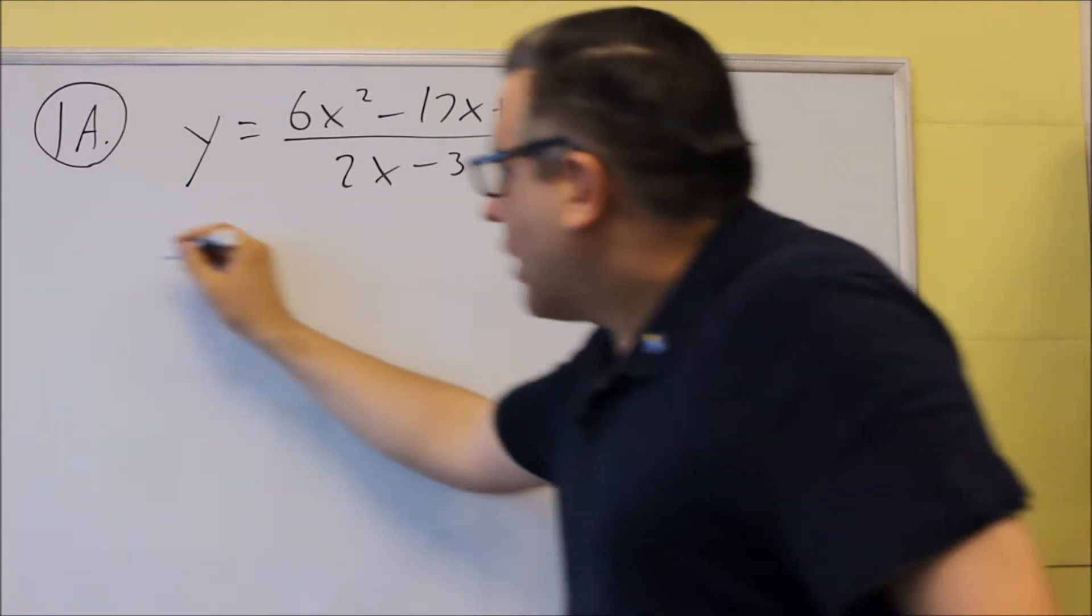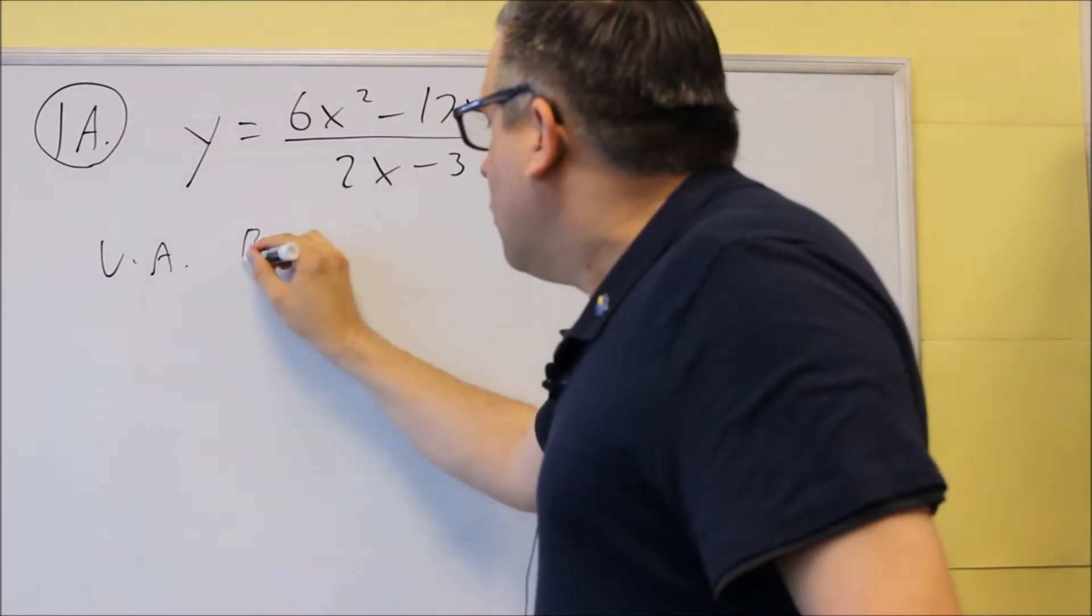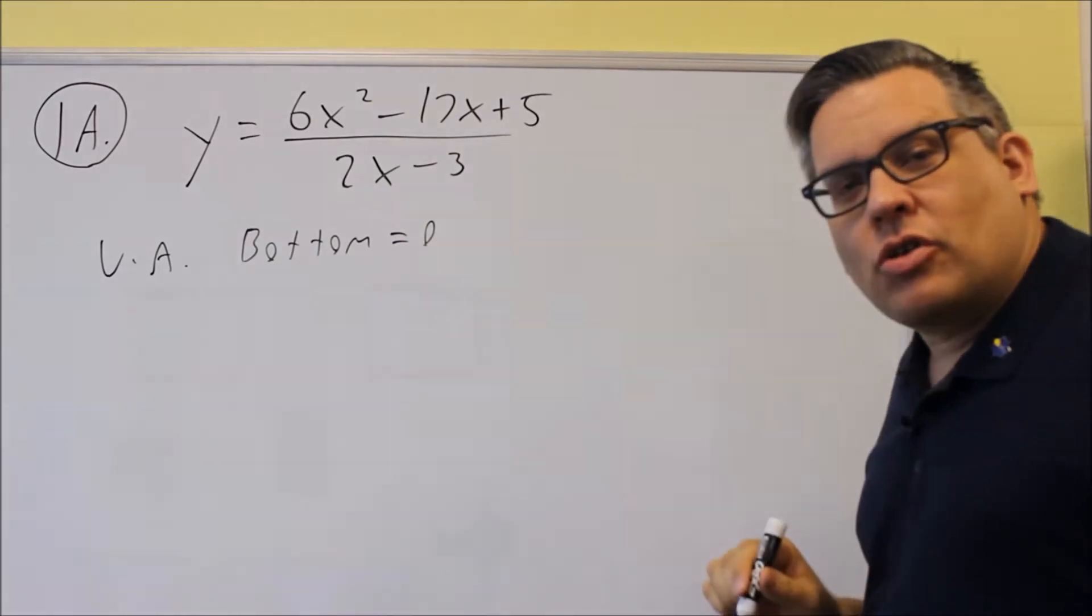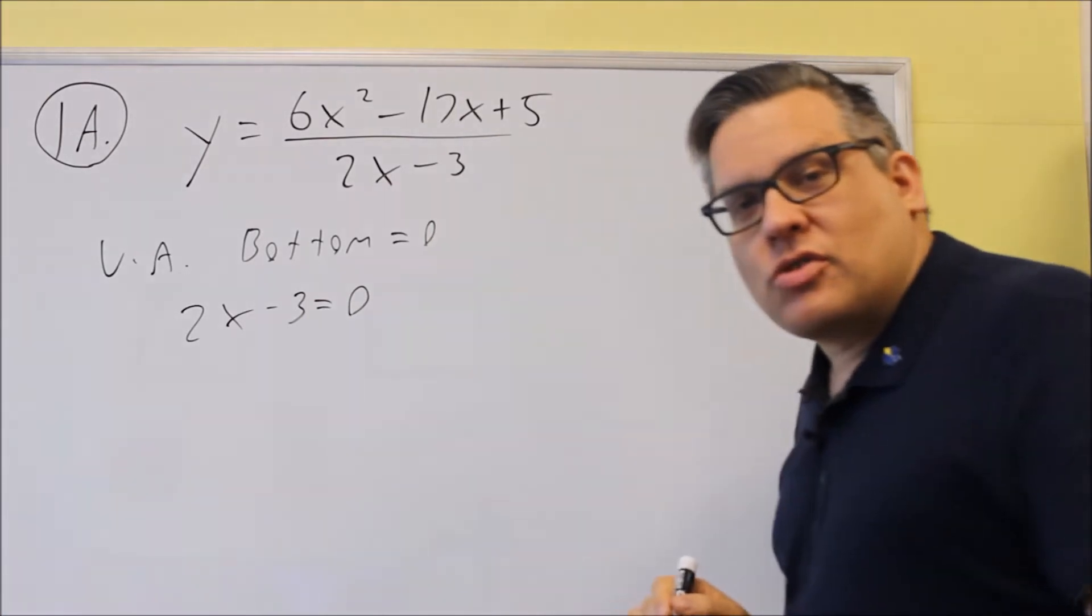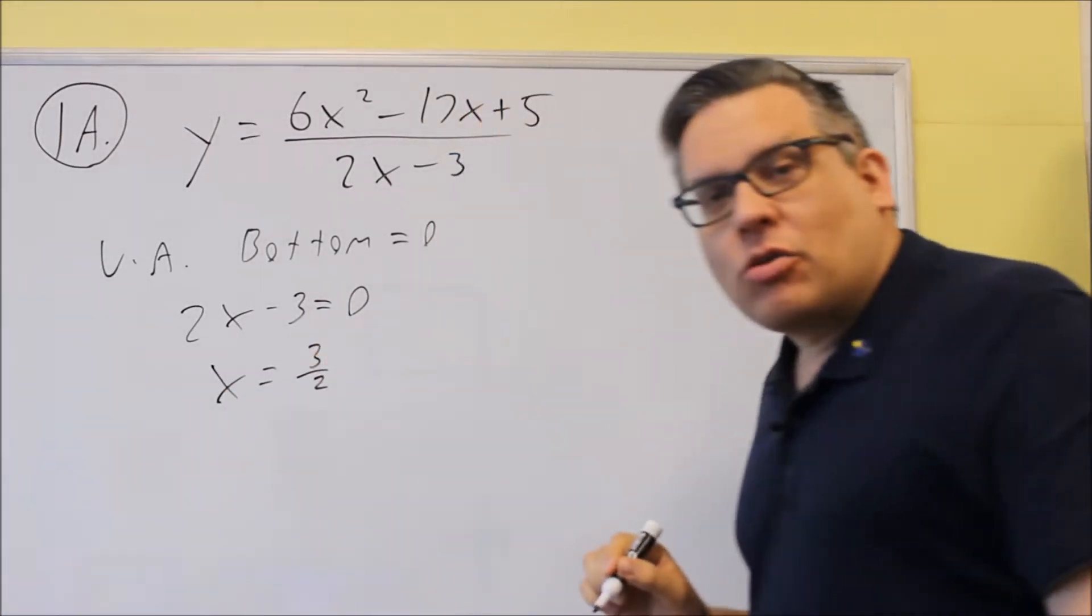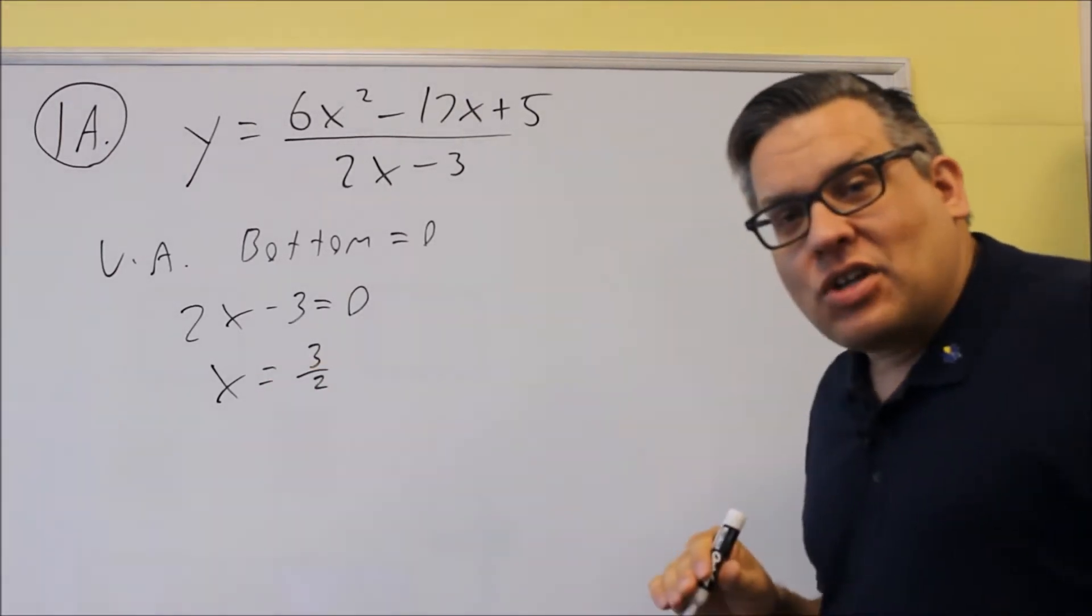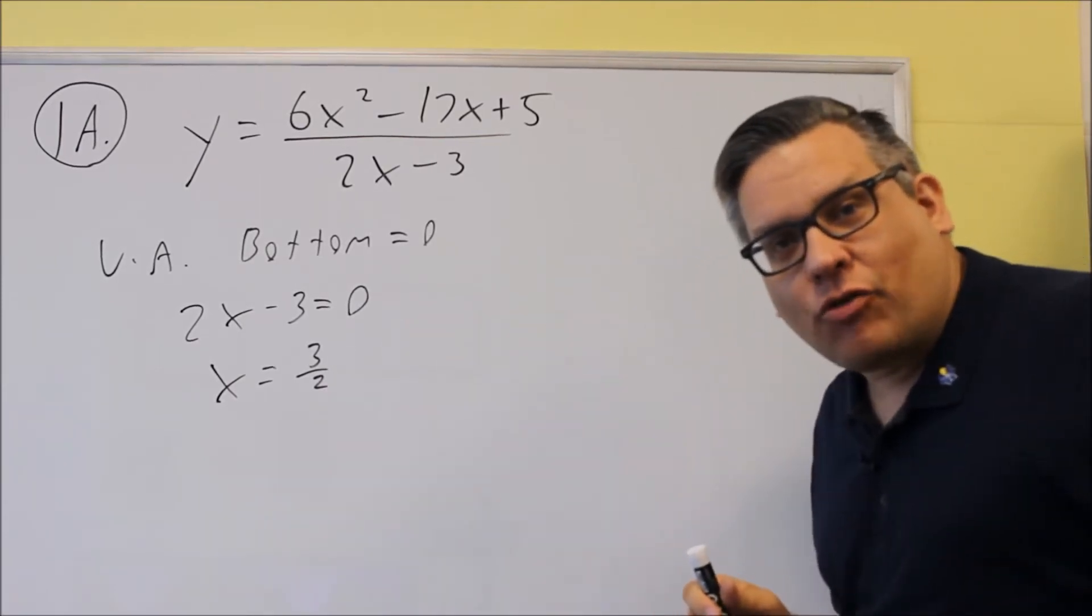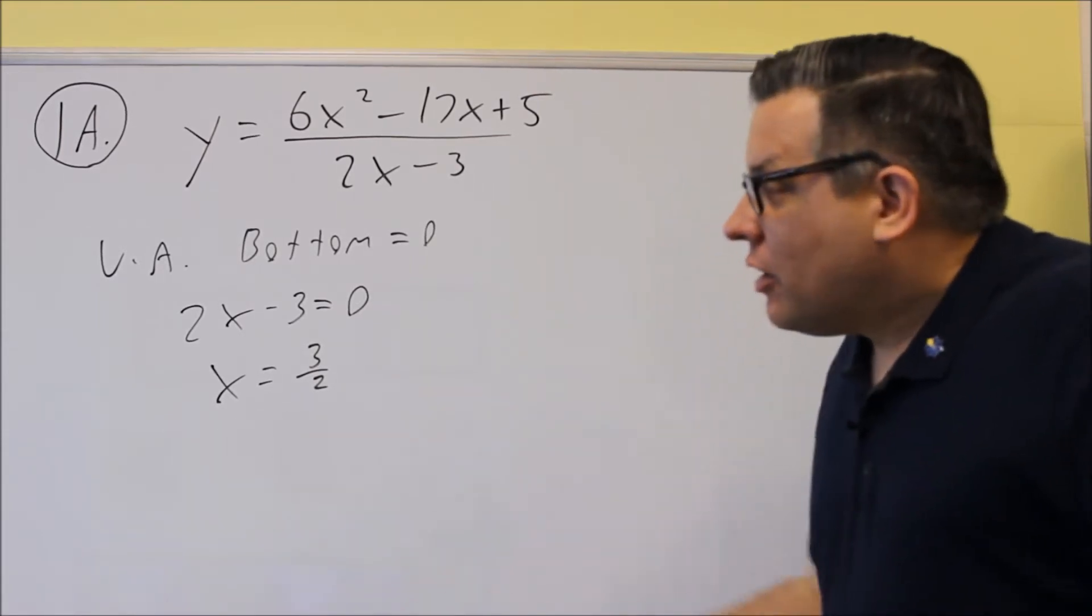Let's start with the vertical asymptotes, so we'll start with the VA. The vertical asymptote, what you're gonna do is set the bottom equal to zero. So we're gonna do 2x minus 3 instead of equal to zero, and when we solve for that we're gonna get x is equal to 3 halves. Now it's very important to make sure you include the x equals and the y equals when you use these asymptotes. If you just put three halves you're not going to get full credit. It's got to be an equation of a line, so make sure you put the x equals there.